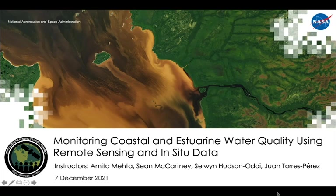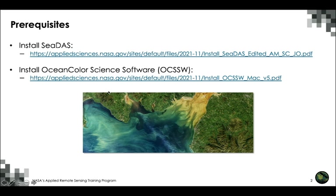Hello everyone. Welcome back to this second and last session of the webinar on monitoring coastal and estuarine water quality using remote sensing and in-situ data. We're going to use two softwares: CEDAS and Ocean Color Science Software, or OCSSW. You must have used CEDAS in last week's exercise. We'll continue to use that and will use OCSSW through the CEDAS GUI. If you haven't installed OCSSW yet, you'll have time during today's lab to do so.